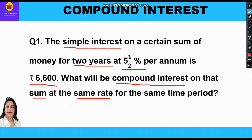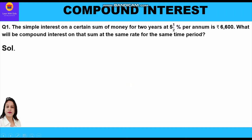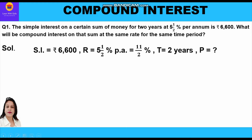Given: simple interest = rupees 6600, rate of interest = 5.5% per annum = 11/2% per annum, time period = 2 years. We have to find the principal, so we shall apply the simple interest formula: SI = PRT/100.